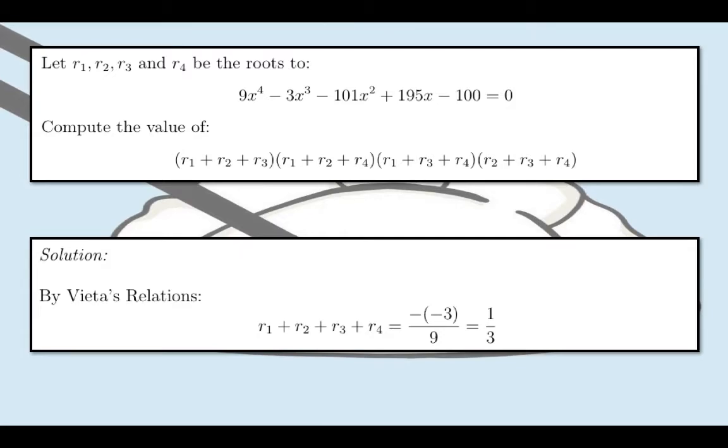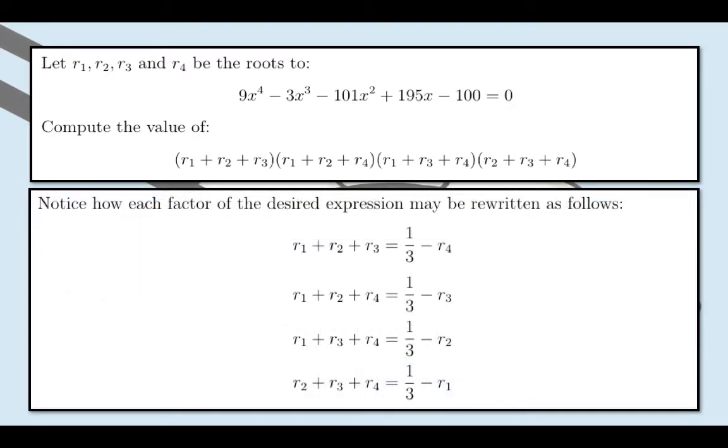And thus, we can rewrite each factor of the desired expression as follows. r sub 1 plus r sub 2 plus r sub 3 can be rewritten as 1 third minus r sub 4 from the sum of the roots by Vieta's relations. And we can do similarly for the rest of the factors.